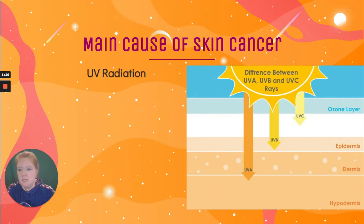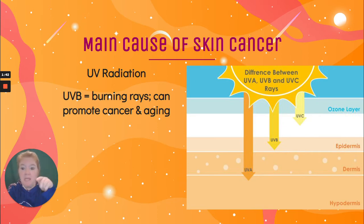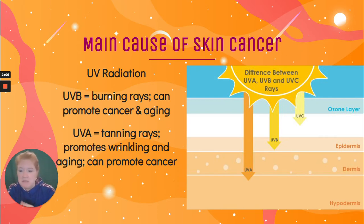What are the main causes of skin cancer? UV radiation. There are three types of UV rays. There's UVC, which we don't really have to worry about because our ozone layer is luckily blocking those. Then we have UVB rays — I remember because it ends in B, and B is for burn. So UVB rays are the burning rays; they can promote cancer and also aging. And then we have UVA rays, which are the tanning rays. But they can also promote wrinkling and aging of the skin, giving someone who's had too much exposure almost a leathery-like appearance. UVA rays can also promote cancer.